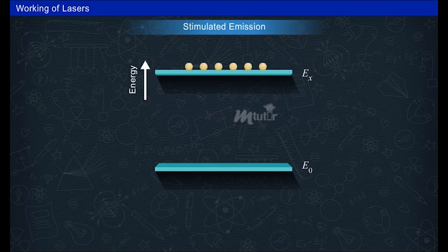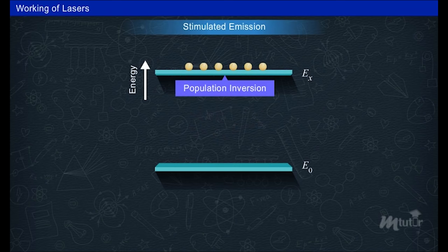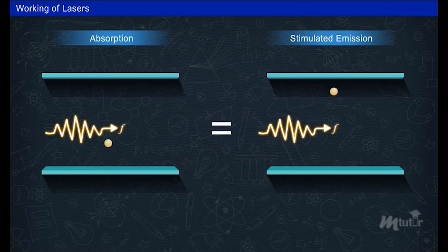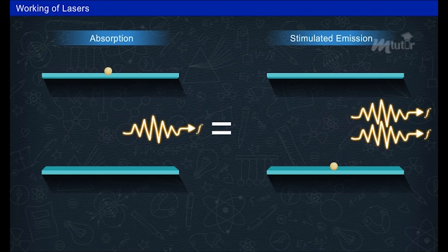Thus through stimulated emission of excited state atoms, more number of photons will be generated. Einstein showed that the probabilities per atom for absorption and stimulated emission processes are identical.